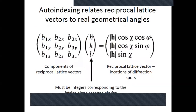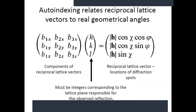The mathematics of auto-indexing takes the components of the reciprocal lattice vectors, multiplies that matrix by HKL values, and obtains the reciprocal lattice vectors of the diffraction spots. This produces observed reflections and shows how reciprocal lattice vectors and geometrical angles relate to one another. This is the equation auto-indexing uses to determine lattice parameters.